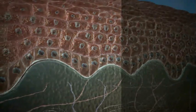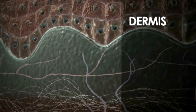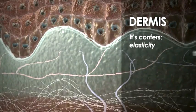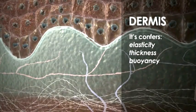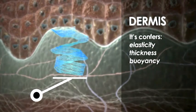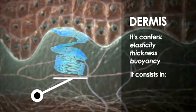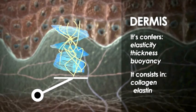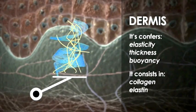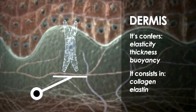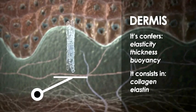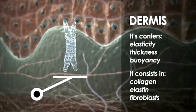The dermis lies below the dermal-epidermal junction. The dermis confers elasticity, thickness, and buoyancy to the skin, thanks to its microarchitecture composed of a fibrous texture mainly consisting of collagen and elastin immersed in an amorphous hyaluronic acid-based structure. These fibrous and amorphous structures of the dermis are synthesized by specific cells called fibroblasts.